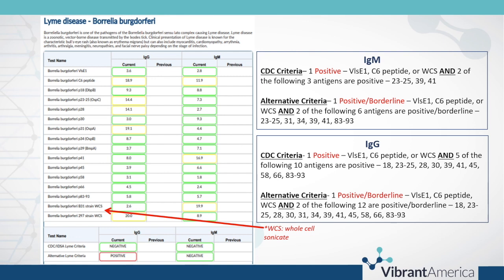Traditional Lyme testing for Borrelia burgdorferi is a two-tier test where we are looking at whole cell sonic hits or organism levels, peptides, as well as recombinant proteins. The Tier 1 of the two-tier testing is the VlsE1, the C6 peptide, and the two whole cell sonic hits at the bottom. The Tier 2 part of the testing is looking for what is known as banding or recombinant proteins, which denotes different portions of the spirochete. For instance, P41 is coding for the flagella, whereas P23 to 25 is coding for a surface protein.